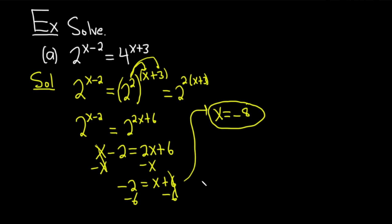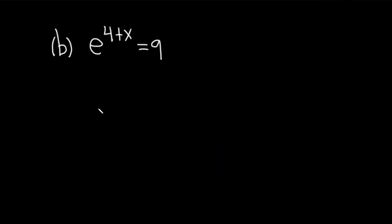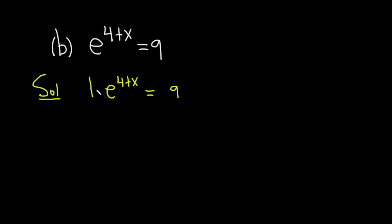Let's go ahead and do another example. Part B, we have e to the 4 plus x equals 9. Let's go ahead and solve this equation. We start by writing it again: e to the 4 plus x equals 9. Now, what we're going to do is take a natural log of both sides. The reason you do that is because x is in the exponent, and this will allow you to bring it down. There is a super powerful formula that says if you have the natural log of e to the x, that's equal to x.